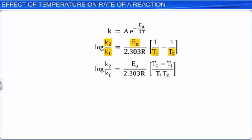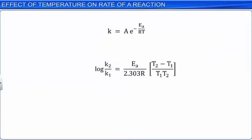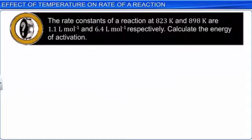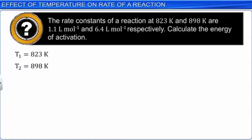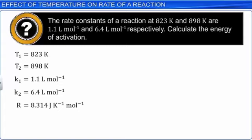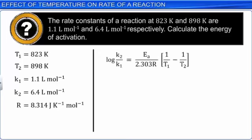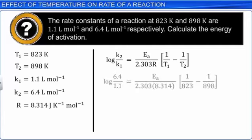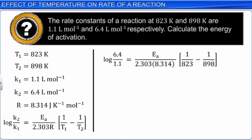Let us now solve a numerical problem. The rate constants of a reaction at 823 K and 898 K are 1.1 L/mol and 6.4 L/mol respectively. To calculate the activation energy: write the given values T1 = 823 K, T2 = 898 K, k1 = 1.1 L/mol, k2 = 6.4 L/mol, and R = 8.314 J/K/mol. Write the Arrhenius equation at two temperatures and substitute all given values. On solving, Ea = 1.4 × 10⁵ J/mol.